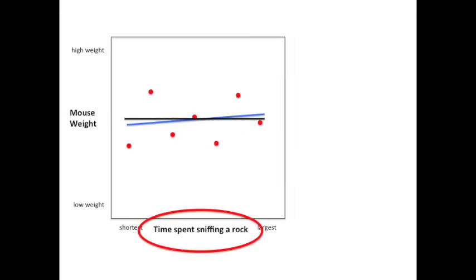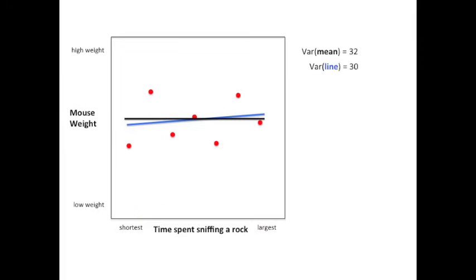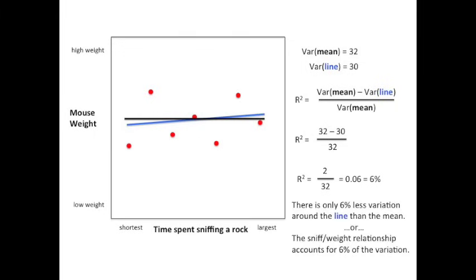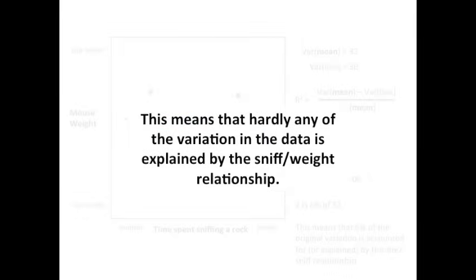Here's another example. In this example, we're comparing two possibly uncorrelated variables. On the y-axis, we have mouse weight again, but on the x-axis, we now have time spent sniffing a rock. Like before, we calculate the variation around the mean, and just like before, we got 32. However, this time when we calculated the variation around the blue line, we got a much larger value — 30. Now we just plug those values into our formula for R-squared. By doing the math, we see that R-squared equals 0.06, or 6%. Thus, there is only 6% less variation around the line than the mean. In other words, the sniff-weight relationship accounts for only 6% of the total variation. This means that hardly any of the variation in the data is explained by the sniff-weight relationship.